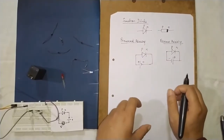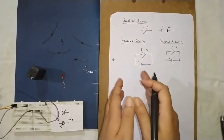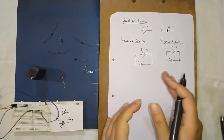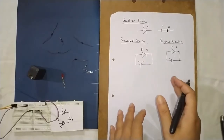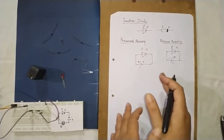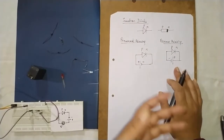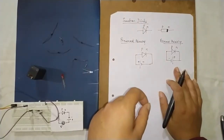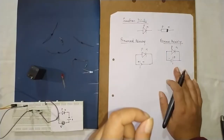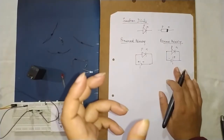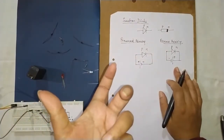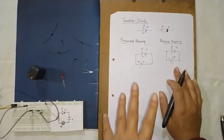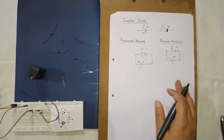We will do the experiment to verify this. In forward biasing, the diode conducts readily and allows current to pass through. In reverse biasing, it does not allow current to pass. We will use an LED to show that it glows in forward biasing and does not glow in reverse biasing.